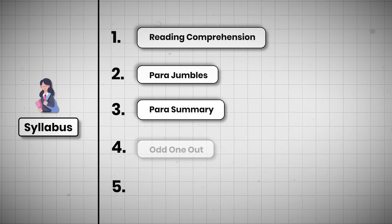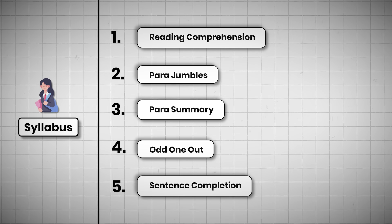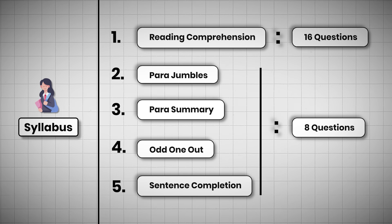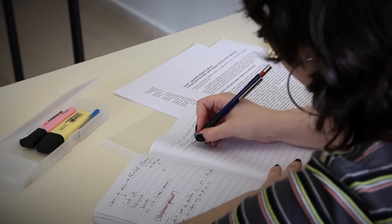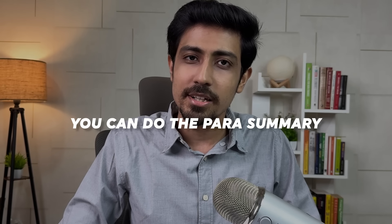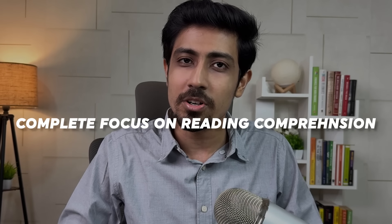Syllabus में included है reading comprehension, para jumbles, para summary, odd one out और sentence completion। अगर आप questions का split देखो तो 16 questions come from reading comprehension और 8 rest questions come from the other topics। आप समझ सकते हो कि reading comprehension कितना important है। अगर आप बस reading comprehension भी कर लो then also you can get 99.5 plus percentile। RC के question solve करने में जो logic use होता है वही same logic para summary और sentence completion में भी use होता है। तो अगर एक topic आपको prepare करना है verbal में, that is complete focus on reading comprehension।